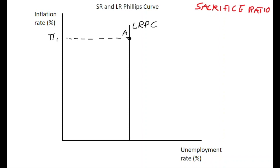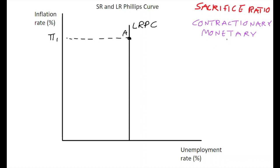What they could implement is something called contractionary monetary policy. This would entail reducing the money supply — monetary authorities maybe increasing interest rates in the economy and selling government bonds in terms of open market operations. These would be contractionary monetary policies.